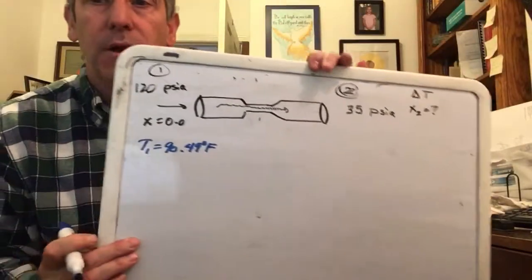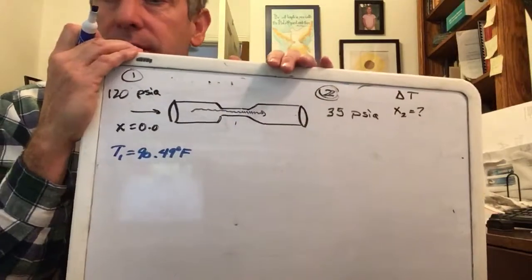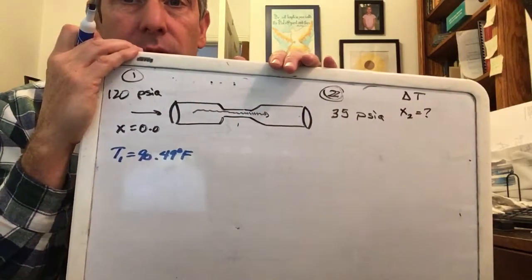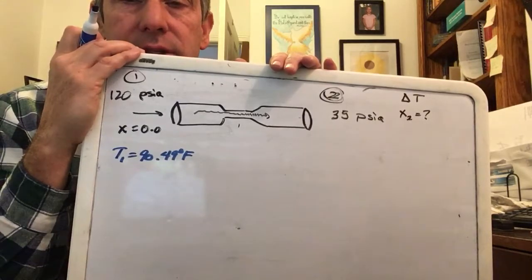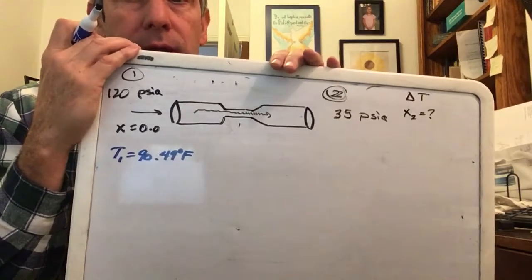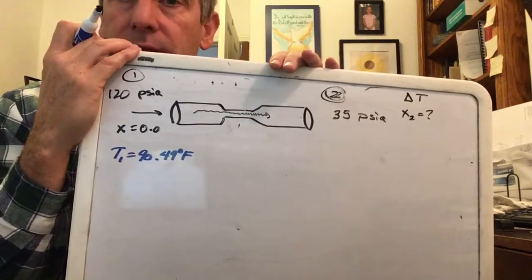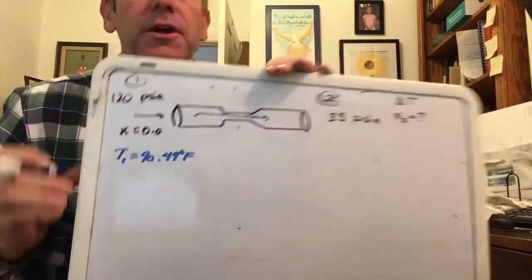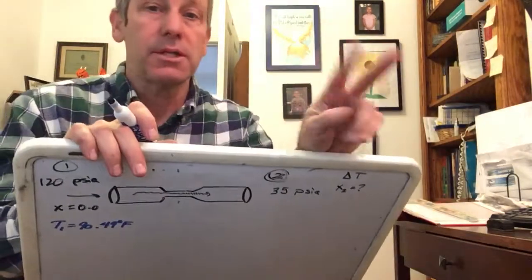I got that the temperature at the inlet is about 90.5 degrees Fahrenheit. So I need the temperature at the outlet and something that'll allow me to do the quality at the outlet. Hopefully you can think about using the tables.